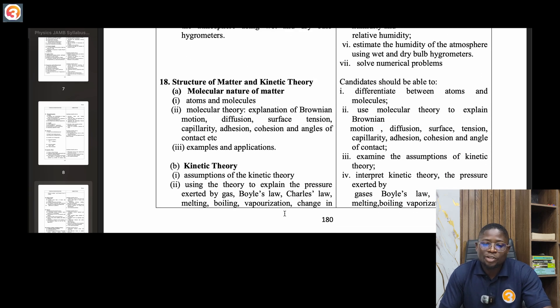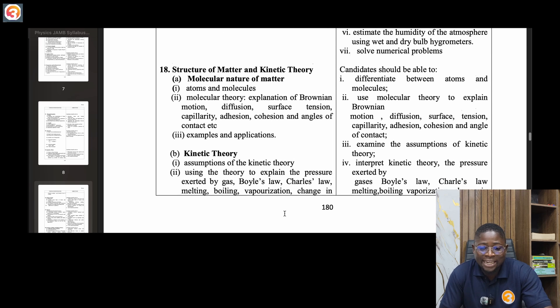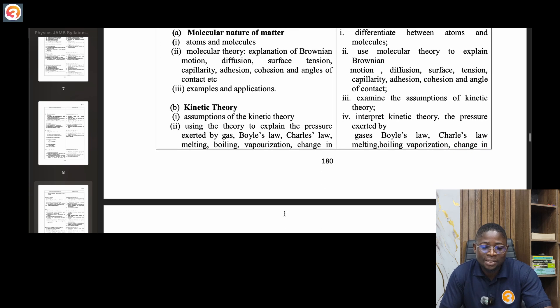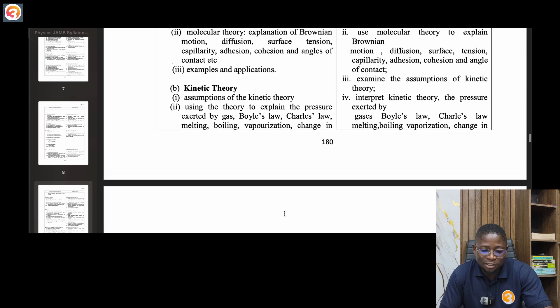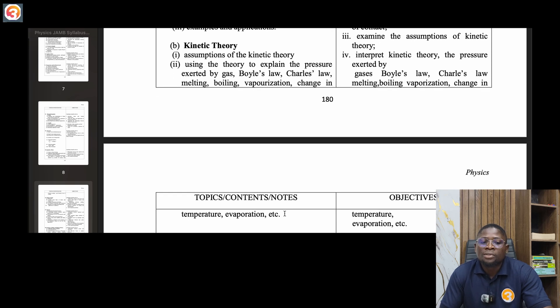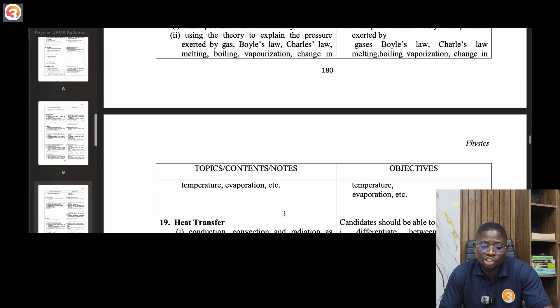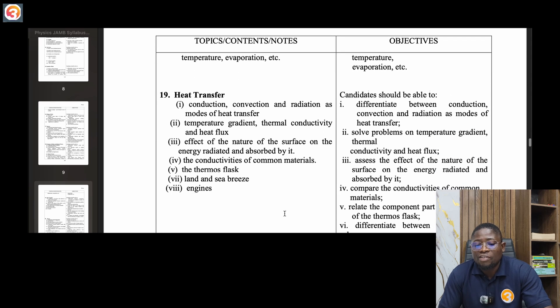Eighteen, structure of matter and kinetic theory. Molecular nature of matter, atoms and molecules, molecular theory, explanation of Brownian motion, diffusion, surface tension, capillarity, adhesion, cohesion and angles of contact, examples and applications. Kinetic theory: assumptions of the kinetic theory, using the theory to explain pressure exerted by gas, Boyle's law, Charles law, melting, boiling, vaporization, change in temperature, evaporation.